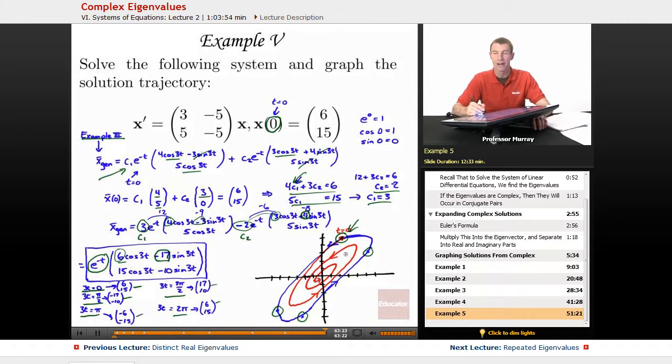It's an elliptic spiral that's getting smaller and smaller and sort of spiraling in towards the origin. And so that red curve there is our actual solution curve, which describes the solution trajectory to this system.